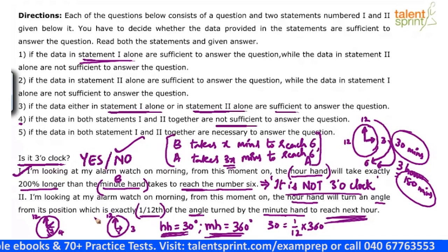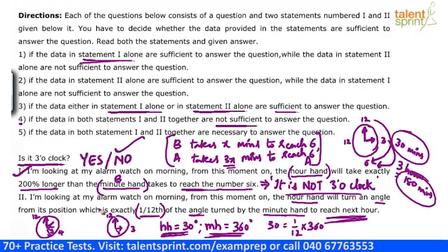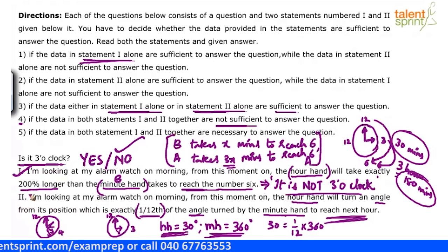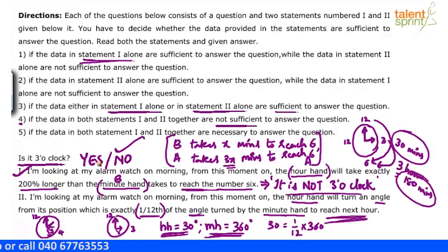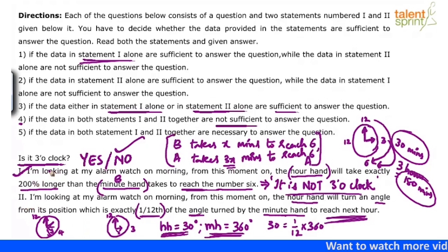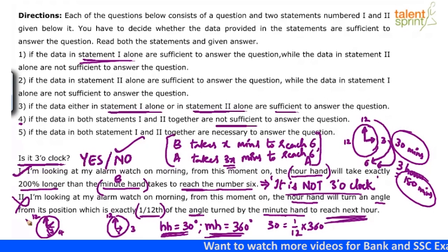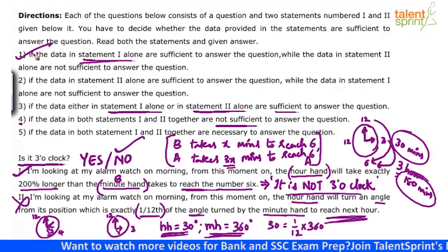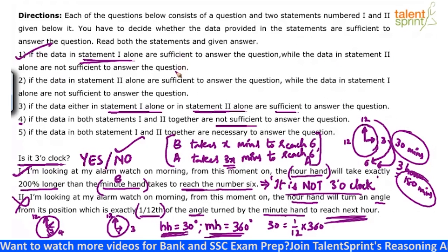So can we say it was exactly 3 AM? No — it could be 3 AM, 4 AM, 5 AM, 6 AM, 2 AM, any time satisfies this condition. So I am not able to answer the question using statement 2. Is it 3 o'clock? You cannot say yes — because 4 o'clock is also possible. You cannot say no — because 3 o'clock is also possible. So there are multiple possible answers from statement 2. Statement 2 alone is not sufficient. Therefore, the answer to this question is option 1: data in statement 1 alone are sufficient, but data in statement 2 alone are not sufficient.